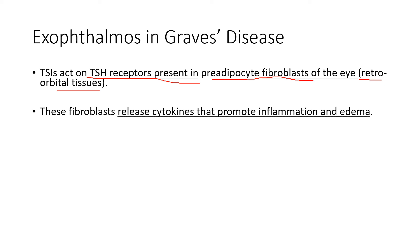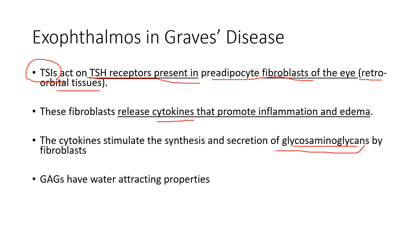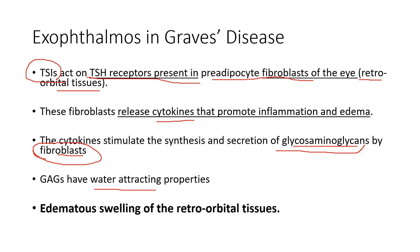The fibroblasts, when stimulated by the TSIs, release cytokines that promote inflammation and edema. These cytokines stimulate the synthesis and secretion of glycosaminoglycans by the fibroblasts. Glycosaminoglycans have a property of attracting water, so when they are produced they increase the water absorption of the fibroblasts, leading to edema, evident as edematous swelling of the retroorbital tissues.